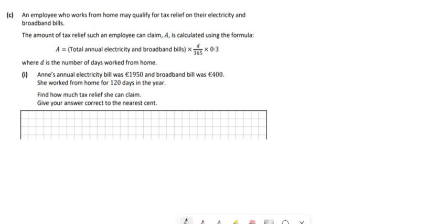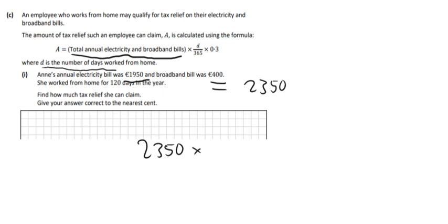Actually, the last part was just filling into a formula really. The total annual electricity and broadband bill. So she has an electricity bill of 1,950. She has a broadband bill of 400. If you add those two together, you get 2,350. So that's what goes in there, in for that thing. So we do 2,350 multiplied by D. That's just going to be... Yeah, that's the days in a year. I saw somewhere, yeah. That's the number of days worked from home. So she worked 120 days from home. So we do 120 in there instead of D. And then over 365. And then we multiply that by 0.3. And that's just putting all that into the calculator. And then that's the last bit. So that's 231.78.